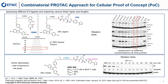Further optimization led to PROTAC ERD-308, having a DC50 of 0.17 nM in a breast cancer cell line and degrading the estrogen receptor nearly completely within three hours. However, ERD-308 has a molecular weight of over 1,000, high lipophilicity, and contains five hydrogen bond donors, making it less suitable for in vivo studies.